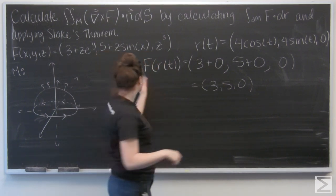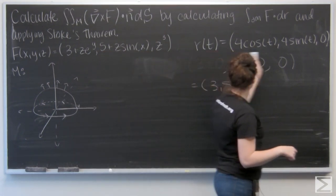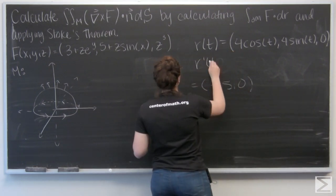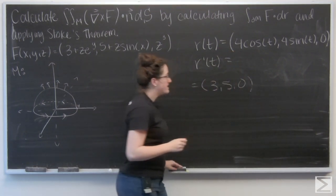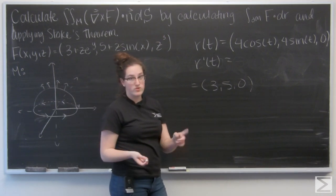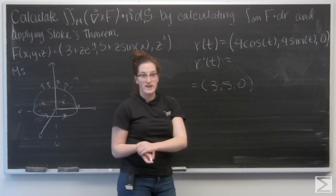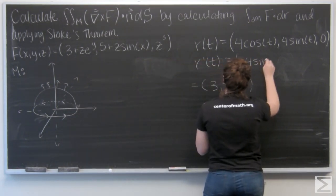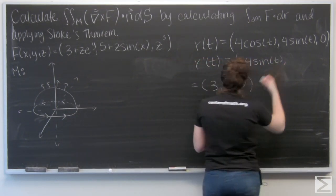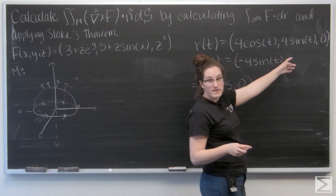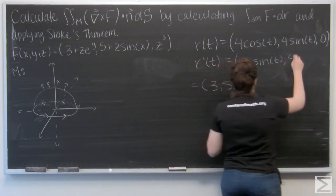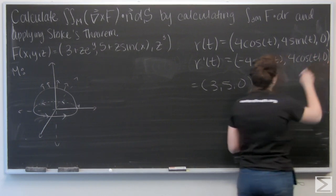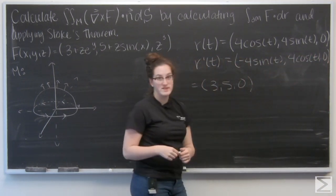So first, with respect to T. So for the I component, I get negative 4 sine of T. For the J component, I get 4 cosine of T. And the K component is still going to be 0.